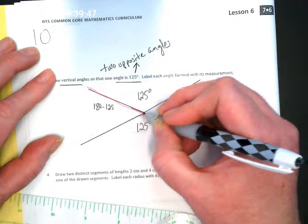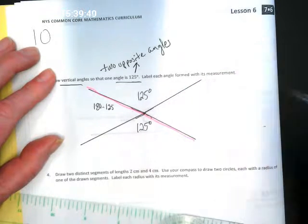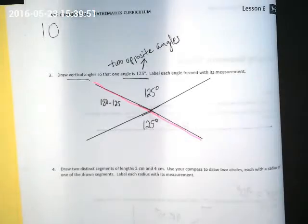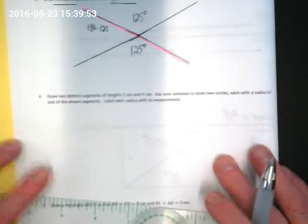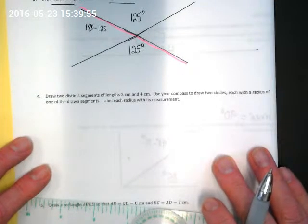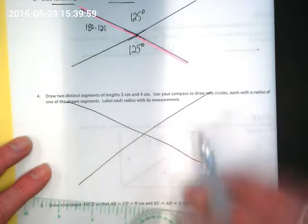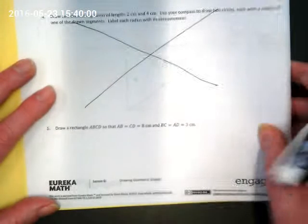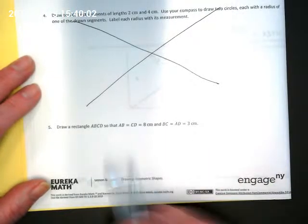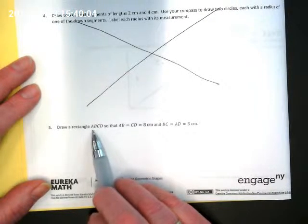And as we learned last week, if I focus on this angle here, that's 180 degrees. So the section in here is going to be the 180 minus 125 will tell us the angle measurement of these two vertical angles.